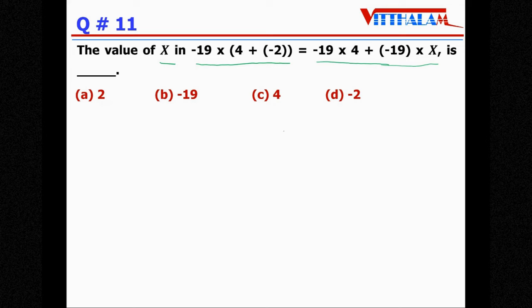Now normally average student will do first remove this bracket, 4 plus minus 2 means it is plus 2 and then it will multiply with minus so it becomes minus 38. Then here it is minus 19 into 4 that is 76 minus then plus minus 19x and then find out the x and x will be minus 2. This is what average student will do.